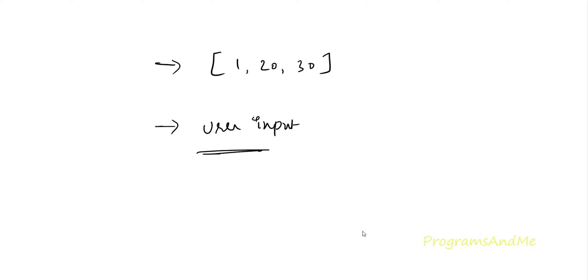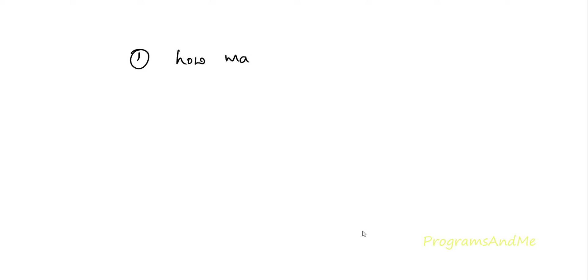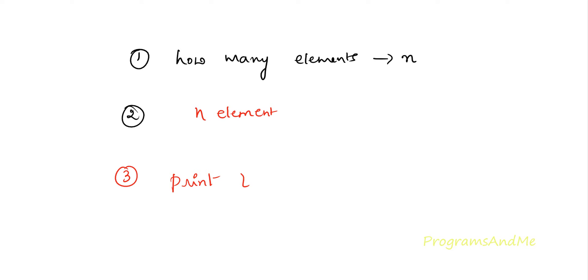Today we will discuss how to take a list as user input. To do this, the first step is we need to ask the user how many elements they want in the list. The second step is, after asking how many elements, if we enter n elements then we need to add n elements to the list. Lastly, we need to print the list. So these are the steps — let's write the program.